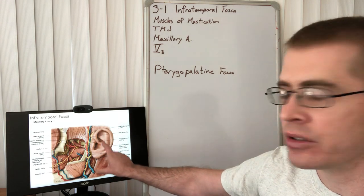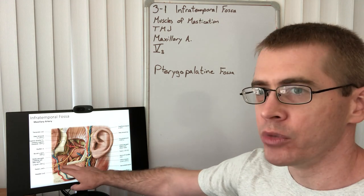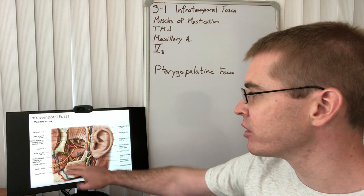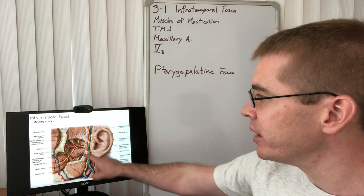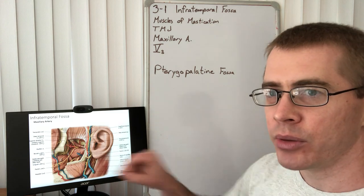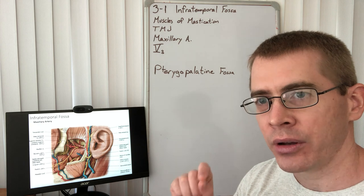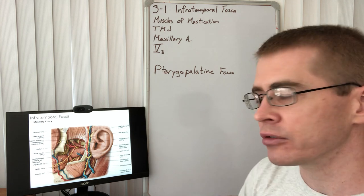This is what the dissection is going to look like when we remove the ramus of the mandible. We're going to see the pterygoids. We are going to have to pull those pterygoids away in order to identify the branches of maxillary artery and the branches of V3, the mandibular division of trigeminal nerve.